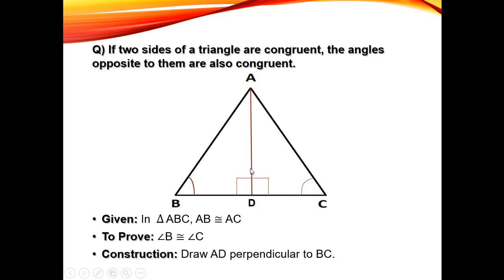We draw a vertical line making a 90-degree angle. This perpendicular bisects the triangle and divides BC — so BD and DC are equal halves. The angle at A is also bisected. For example, if angle A is 60 degrees, it becomes angle 1 and angle 2, each 30 degrees. This is the isosceles triangle property.